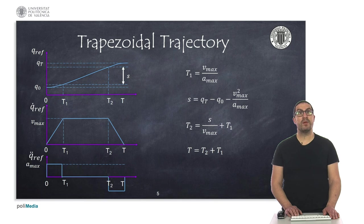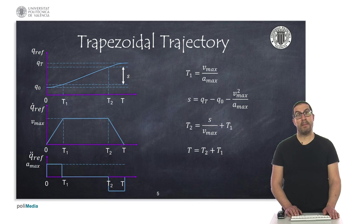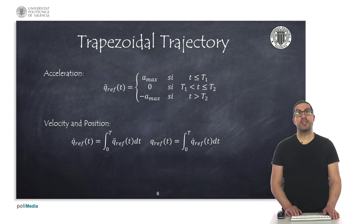During that time the robot is moving at constant speed, which allows us to know the time instant t2. With all that, we can also know the overall trajectory time t. It is important to remark that here I am only considering the case where the trajectory implies reaching the maximum velocity. There might be cases where the position displacement is so small that the trapezoidal profile becomes actually a triangular profile — this case is not considered in this formula. Once we know the time instances to switch, we can get a closed-form expression for the acceleration, velocity, and position profile using these piecewise functions.